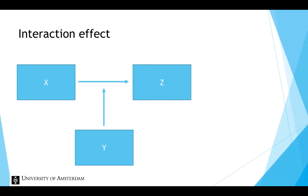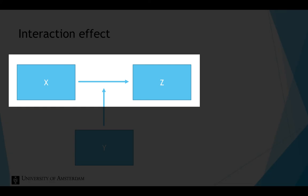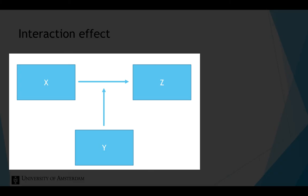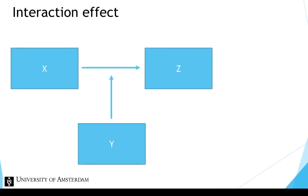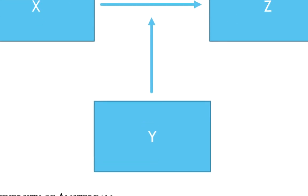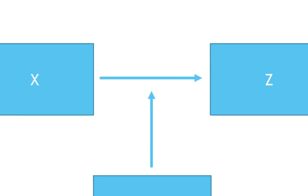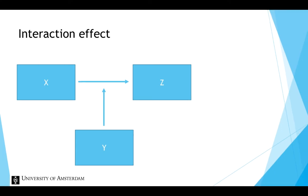The third type of causal relationship is an interaction effect. In this example, x has a direct effect on z, but the strength of this effect depends on the level of another variable, y. In other words, y has an effect on the relationship between x and z. The variable y is also referred to as a moderator variable. The moderator variable could for instance be gender, and the effect of grade on self-esteem could be stronger for women than for men.